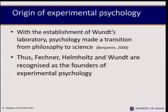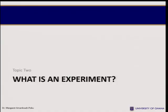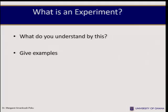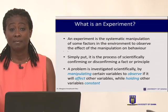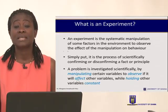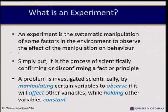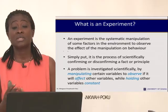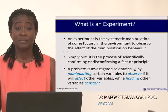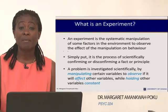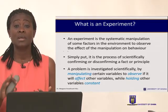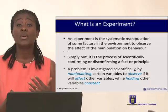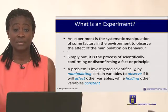So what is an experiment? An experiment is the scientific manipulation of some factors in the environment to observe the effect of that manipulation on behavior. We manipulate certain variables to see how behavior will change. Simply put, it is a process of scientifically confirming or disconfirming certain facts, principles, or hypotheses. We manipulate certain variables, observe the effect of those manipulations, and while doing so we also try to control extraneous variables or hold them constant.